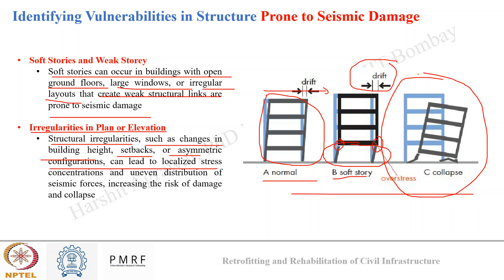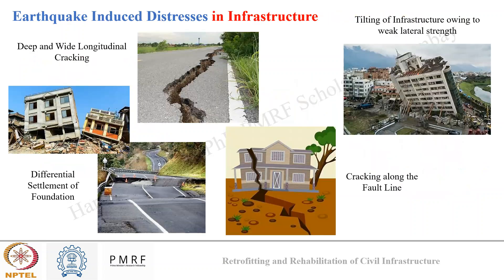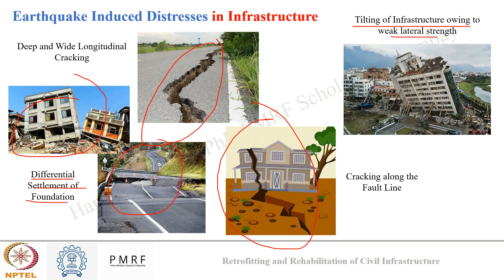If such assessment and identification of vulnerabilities are not properly carried out in existing infrastructure, upon receiving earthquake vibrations a structure can experience major distresses: deep or wide longitudinal cracking, differential settlement of the foundation if the soil is weak leading to collapse, cracking along the fault line, or tilting of infrastructure due to weak lateral strength. These distresses appear in infrastructure made of weak materials or poor design practices, or when not assessed properly based on geological conditions or past earthquake records.